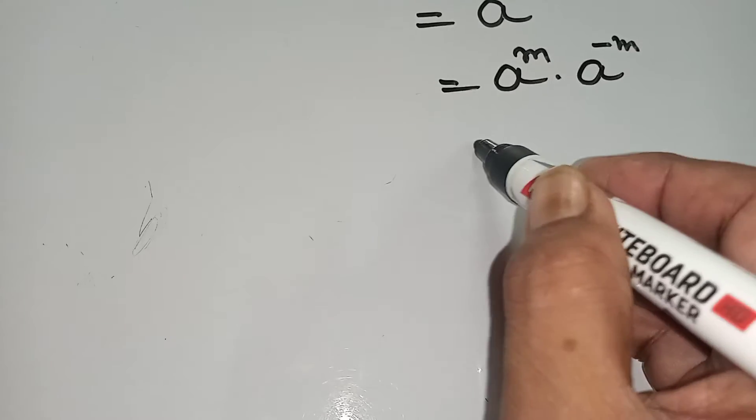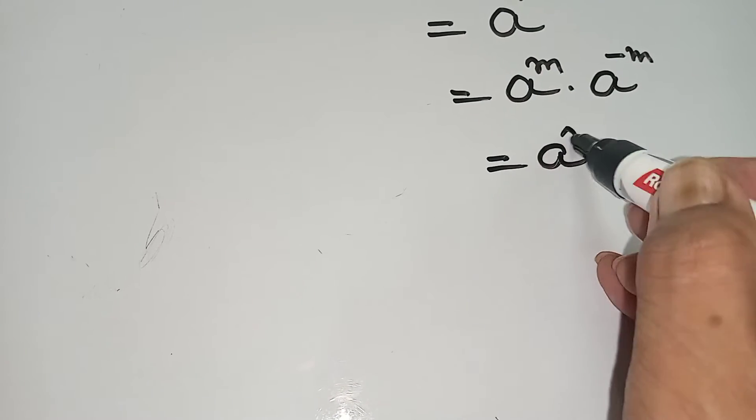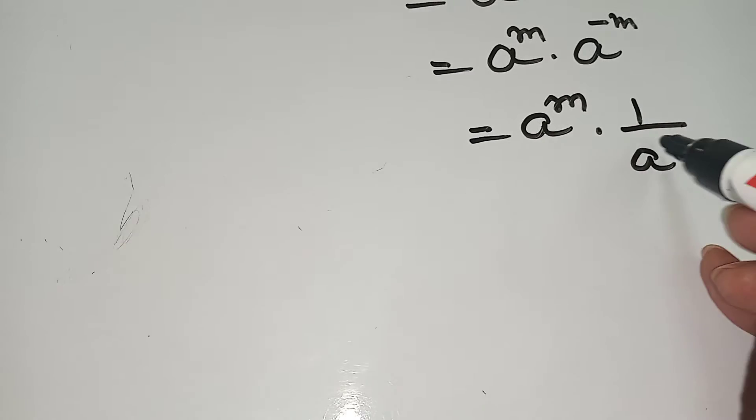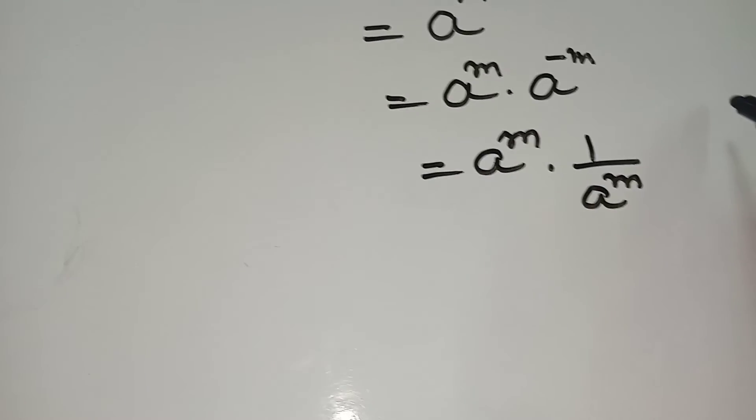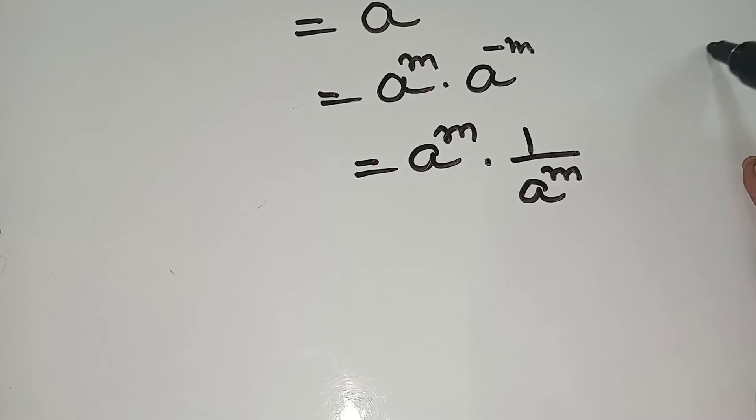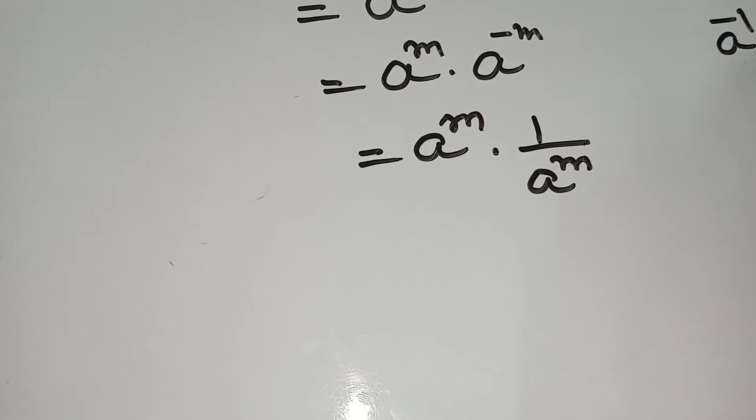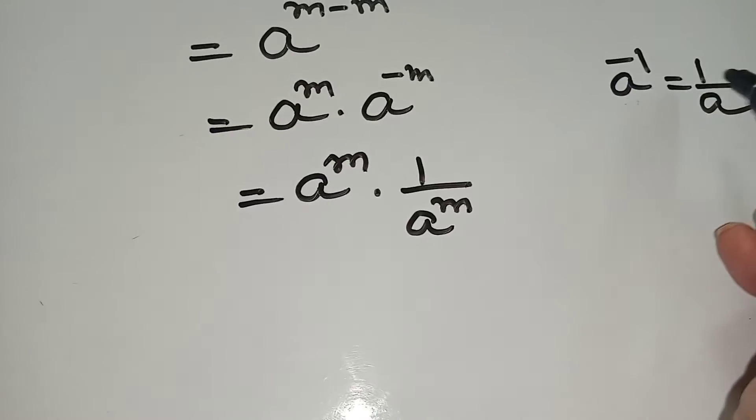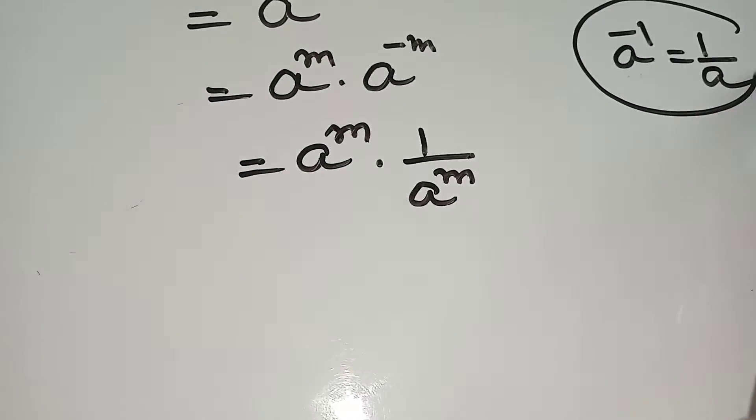Next, a to the power m, and this is you can write 1 by a to the power m. Because you know a to the power minus 1, that means 1 by a. A to the power minus 1 equals 1 by a.